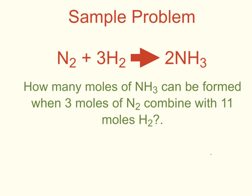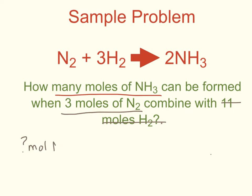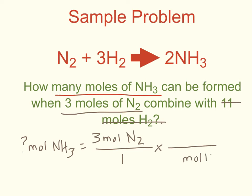Now I can go back and actually solve my problem. The problem asks how many moles of ammonia can be formed from 3 moles of nitrogen and 11 moles of hydrogen. Now that I know my limiting reactant is nitrogen, I'm going to start with 3 moles of nitrogen and ignore the 11 moles of hydrogen gas. So I start my problem with my unknown: how many moles of ammonia are present when I react all 3 moles of nitrogen gas? I put my given over 1, and I want moles of nitrogen to cancel, so that unit goes on the bottom of my next fraction.